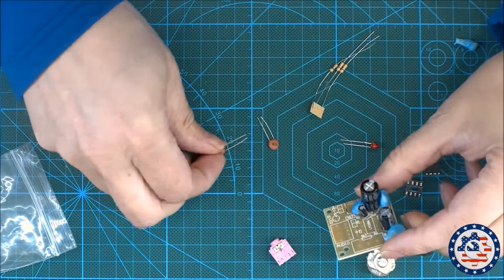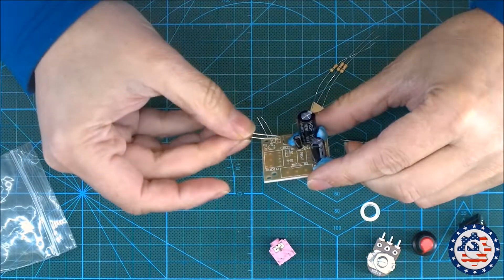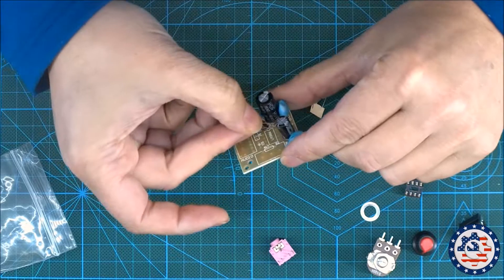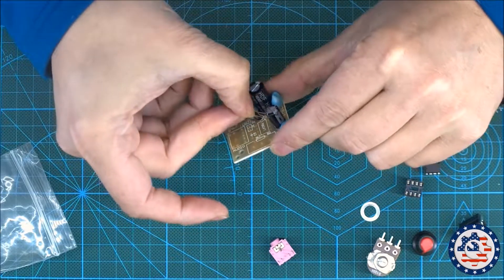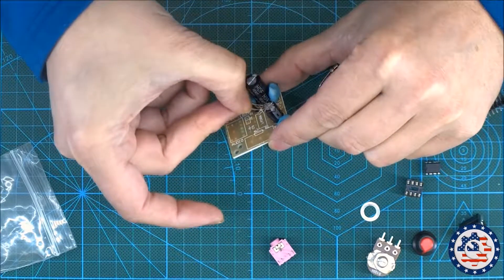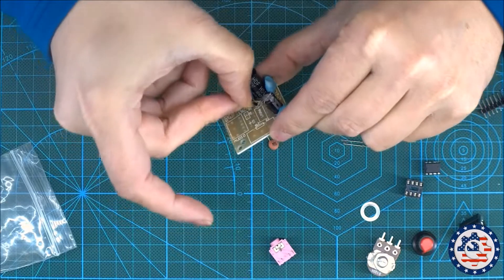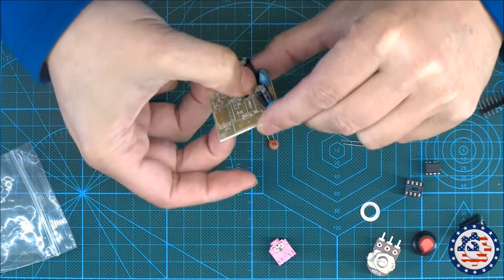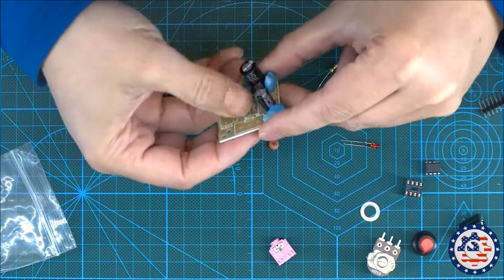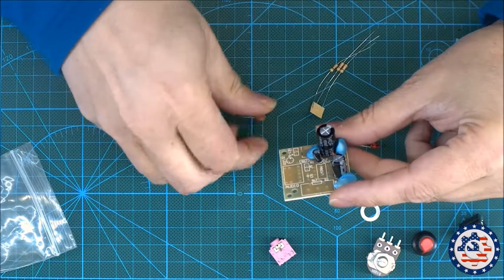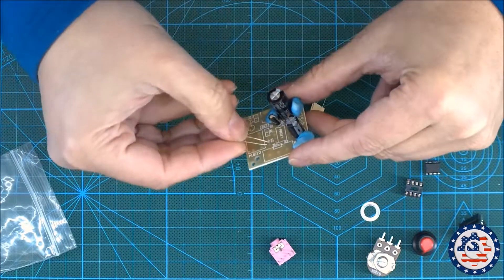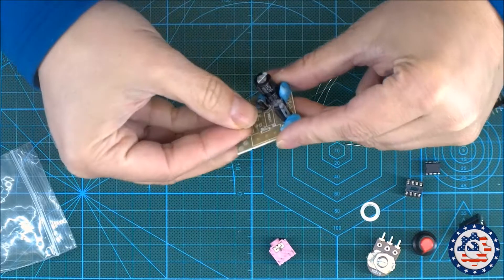And then these two ceramic capacitors are the same value and I can see we have C8. That's the same value and I can see we have C5. So let's put this in, those two capacitors.